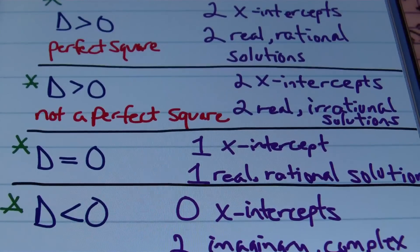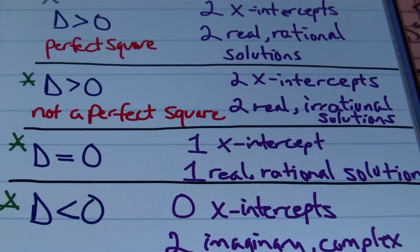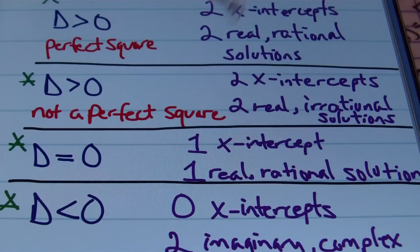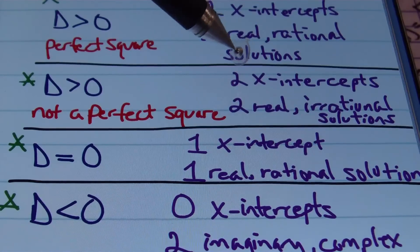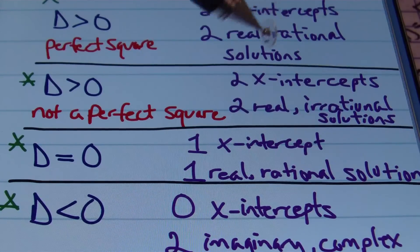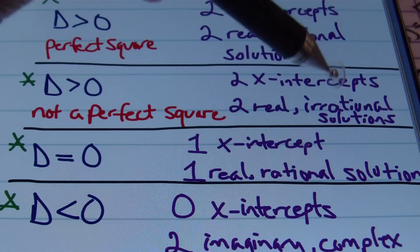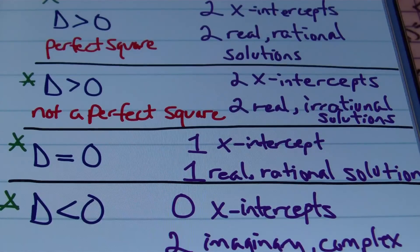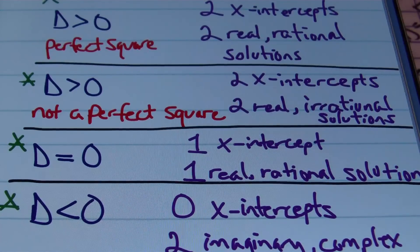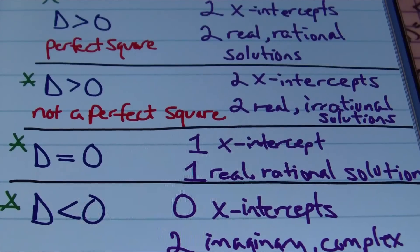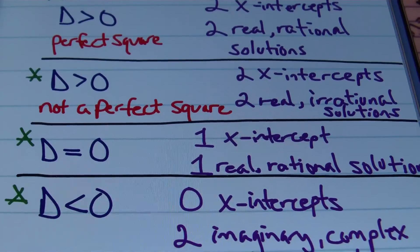If your discriminant value is a positive number but it's not a perfect square, you'll still have two x-intercepts, but you'll have two real irrational solutions. There will be radicals involved — it won't come out nice and clean, but the answers will be correct.